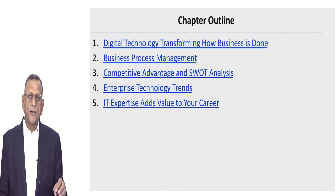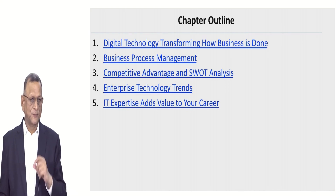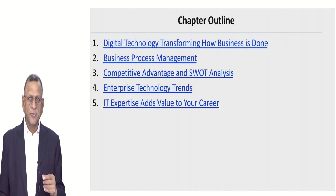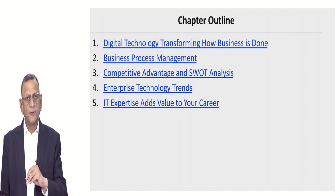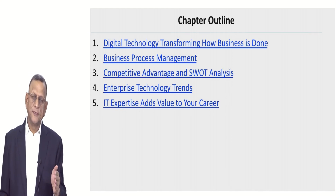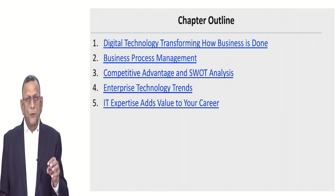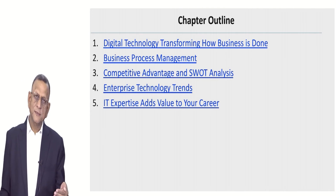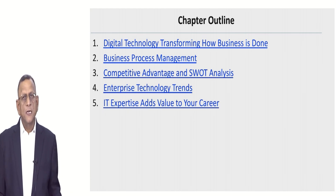Section 1.2 is talking about business process management. We have started looking into business in terms of processes. This process is something like input, processing, and output. When we are in a position to see things in this manner, we are in a position to focus on improvement of performance, effectiveness and efficiency. That's why we have started defining everything in terms of process.